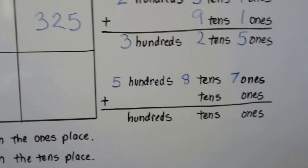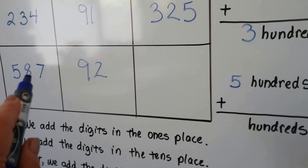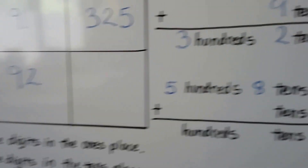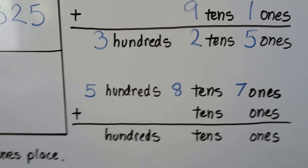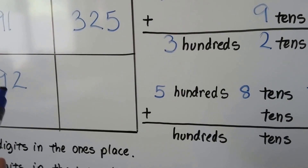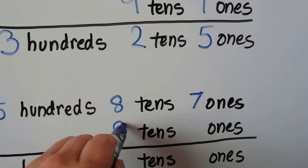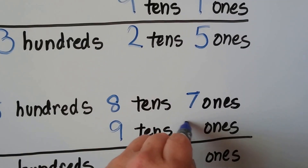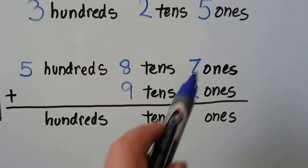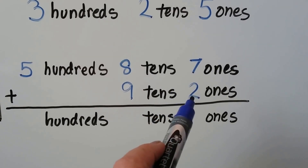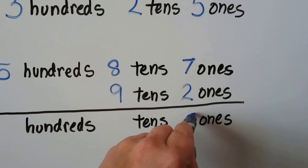So we write it like this. We have five hundreds, eight tens, and seven ones. We're going to add nine tens and two ones. We add the ones place first. Seven plus two is nine: seven, eight, nine.